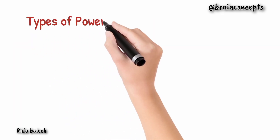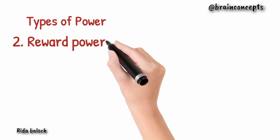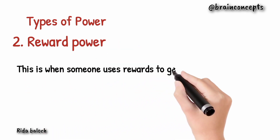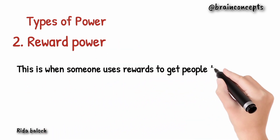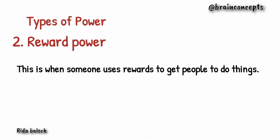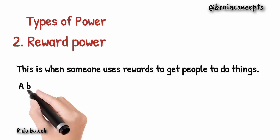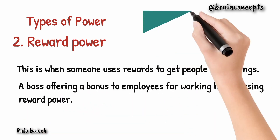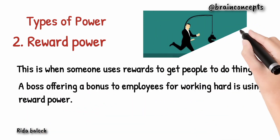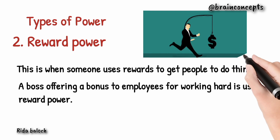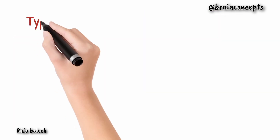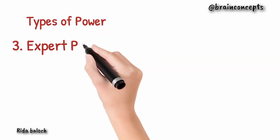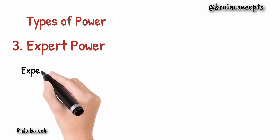The second one is reward power. This is when someone uses rewards to get people to do things. For example, a boss offering a bonus to employees for working hard is using reward power. The third type is expert power.